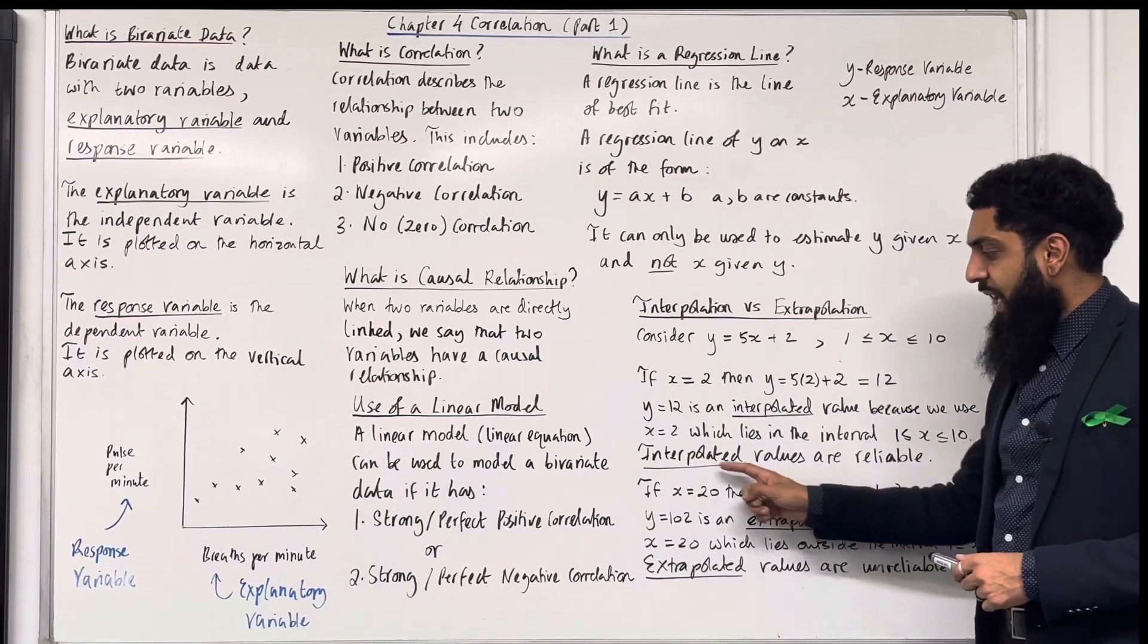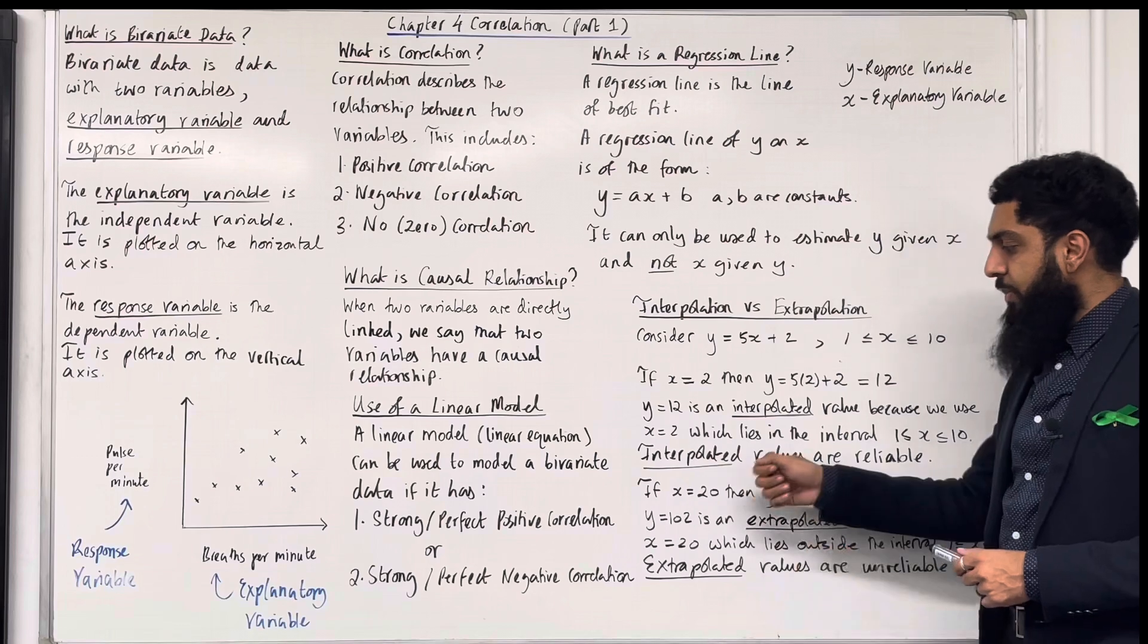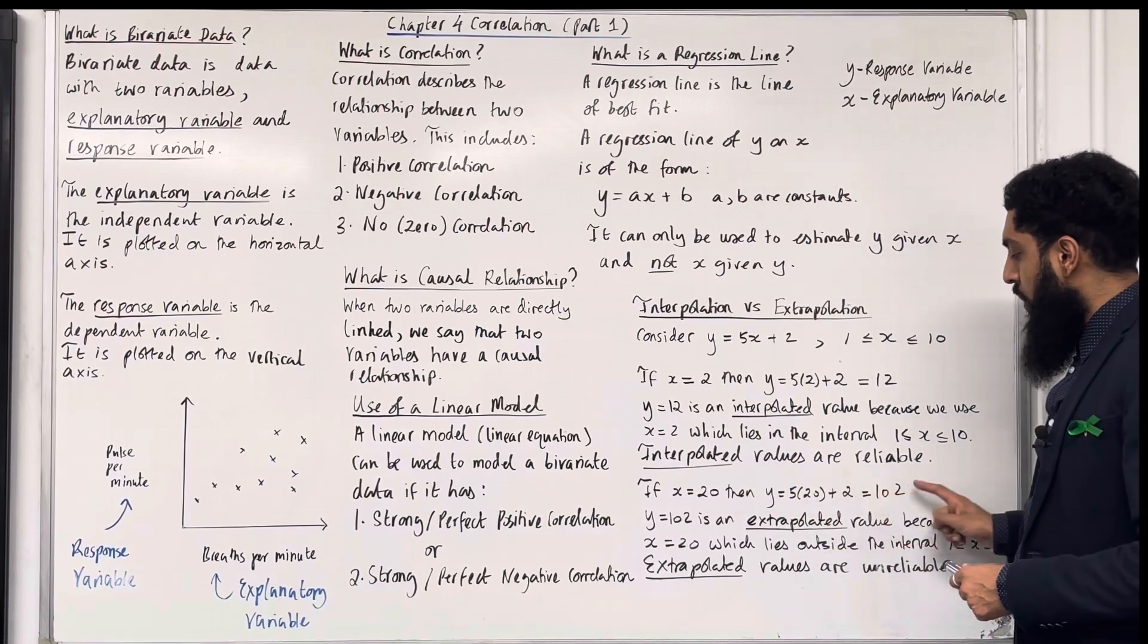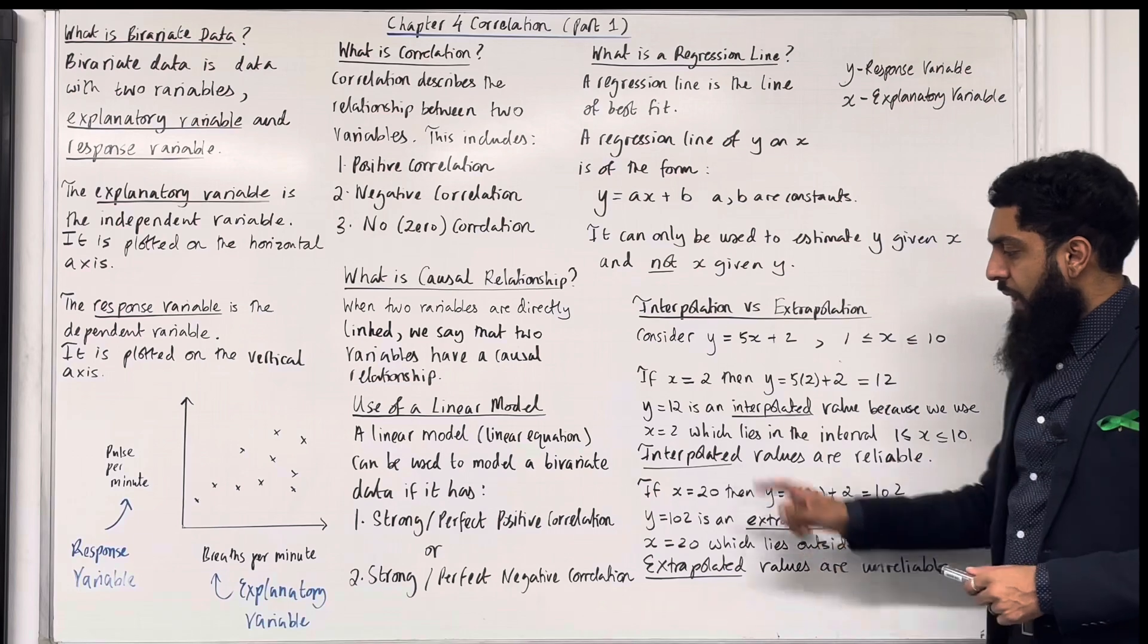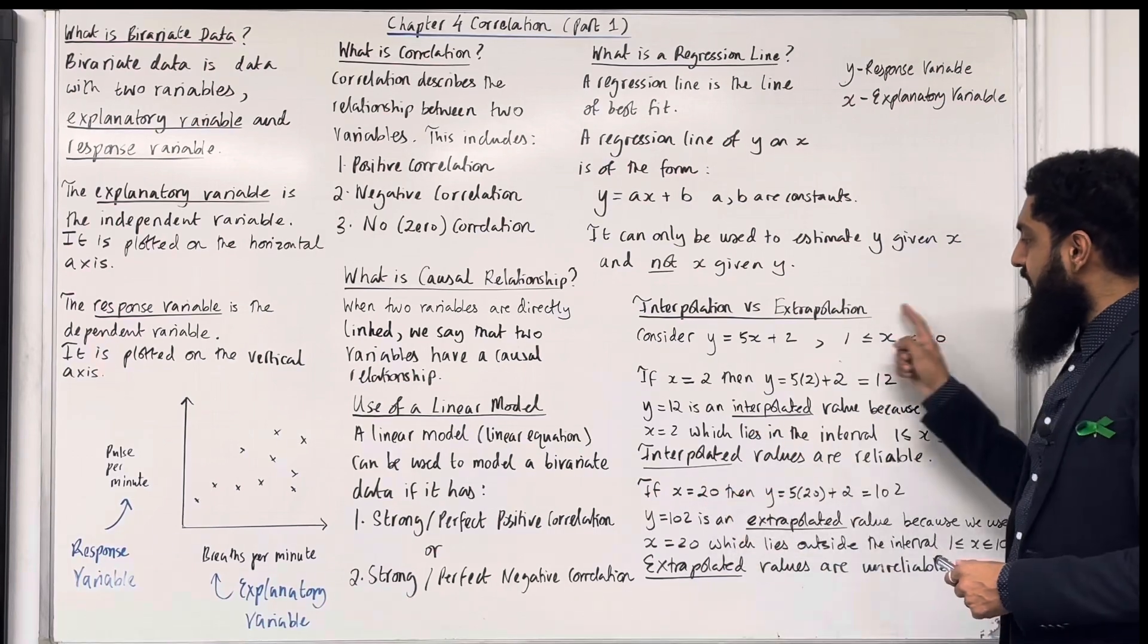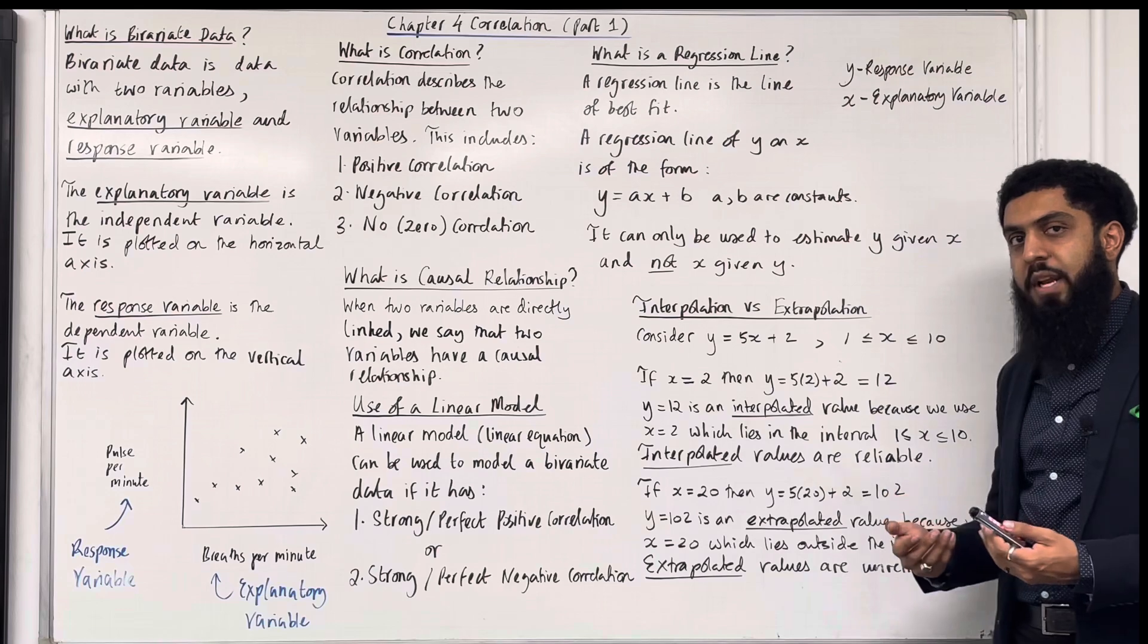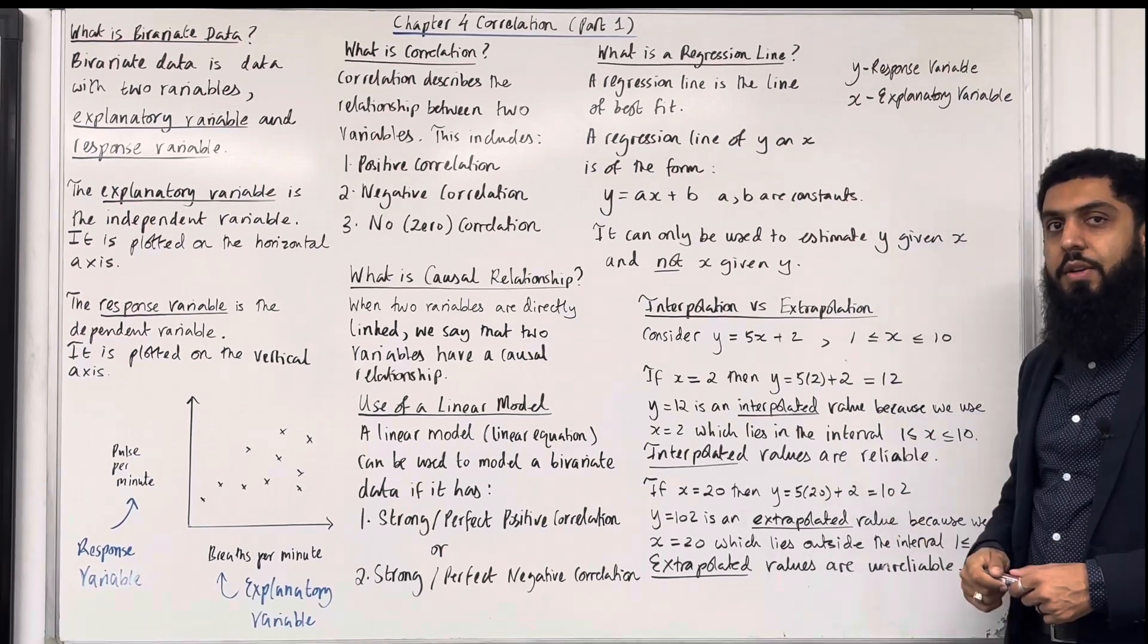So, suppose now we take x equal 20. If we substitute x equal 20, we get y equal 5 times 20 plus 2, which is 102. Now, x equal 20 is not in this interval. So, y equal 102 is an extrapolated value. Extrapolated values are unreliable.